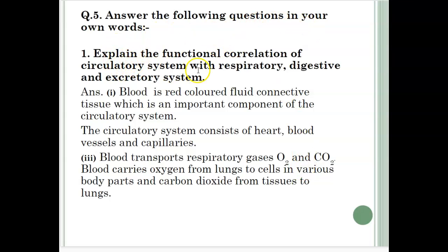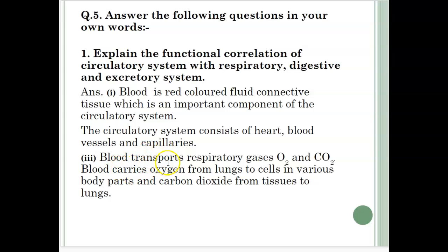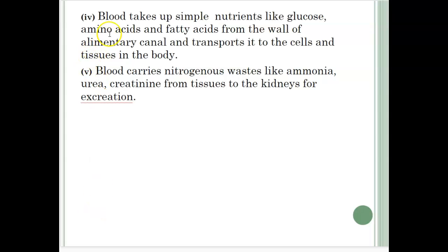Answer the following questions in your own words. Explain the functional correlation of circulatory system with respiratory, digestive and excretory systems. Blood is a red colored fluid connective tissue which is an important component of the circulatory system. The circulatory system consists of heart, blood vessels and capillaries. Blood transports respiratory gases — oxygen and carbon dioxide — from lungs to cells and from tissues to lungs. Blood takes up simple nutrients like glucose, amino acids and fatty acids from the wall of the alimentary canal and transports them to cells and tissues. Blood carries nitrogenous wastes like ammonia, urea and creatinine from tissues to the kidneys for excretion.